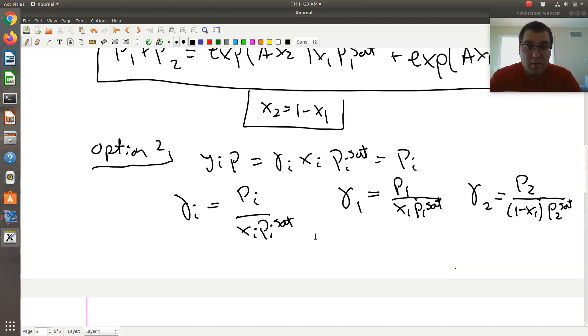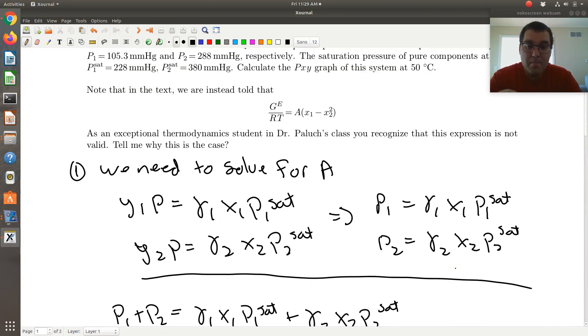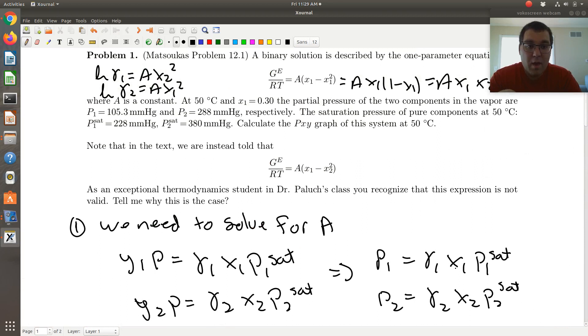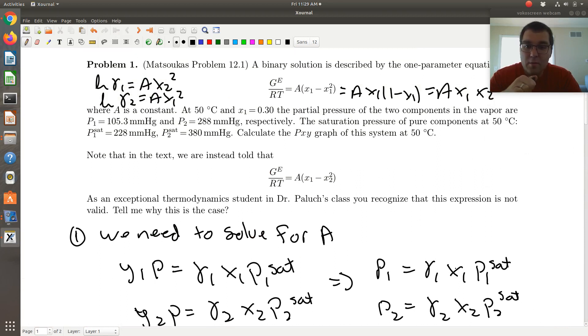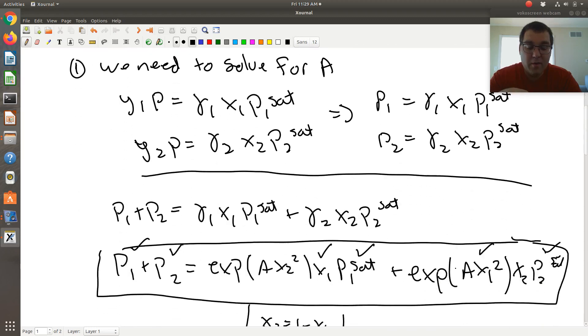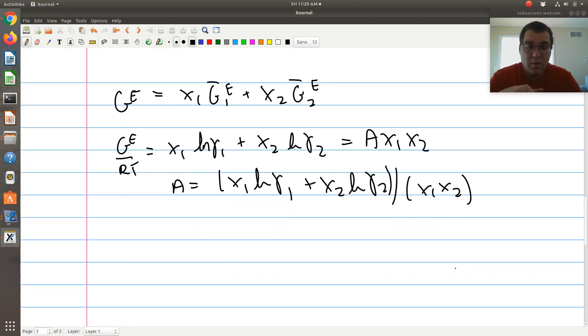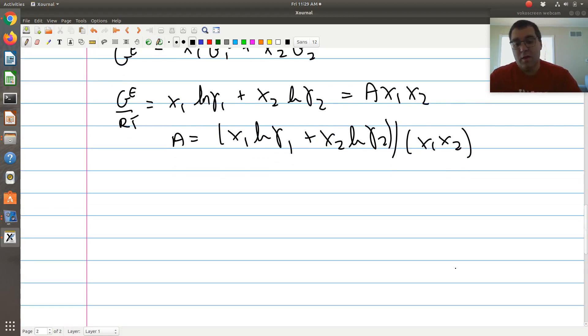Cool, so we could solve for A. And then next it wants you to map out a PXY phase diagram. Cool, well, the key is, once I have A, in terms of mapping out PXY, we know P1 sat, and we know P2 sat, at 50 degrees C, so those are known.